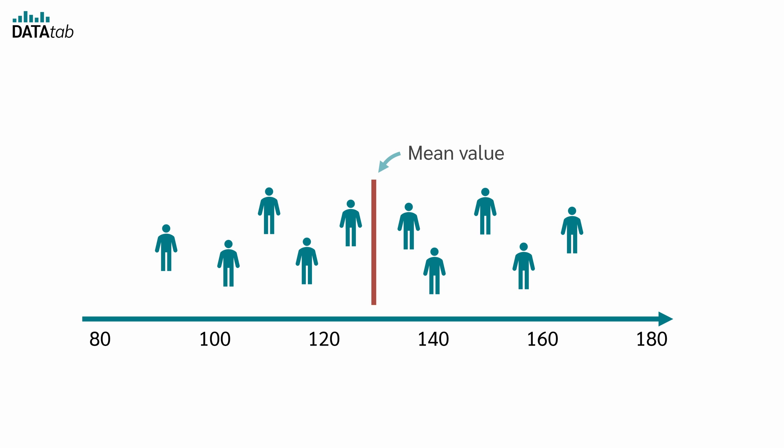Of course, you can now calculate the mean value from the measured data, i.e. the value that the 40 patients have on average. Some patients will have a lower value than the mean, others a higher one. Now one of the patients wants to know how his blood pressure compares to the other patients. You tell him that his blood pressure is 10 above the average. Now the question is, is 10 a lot or a little?